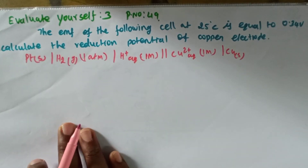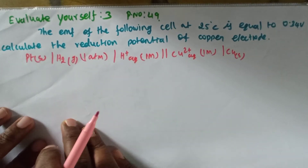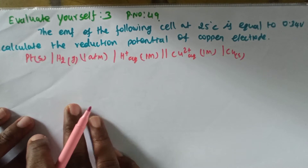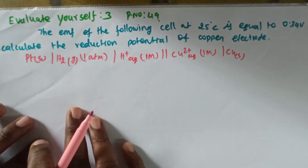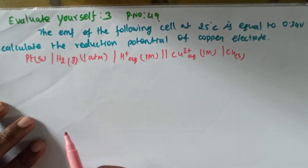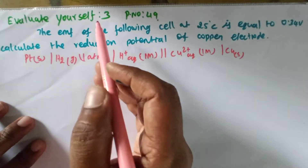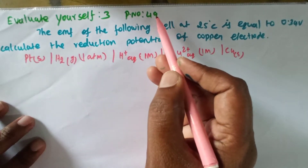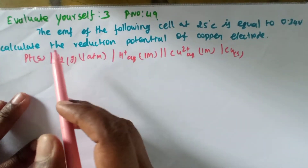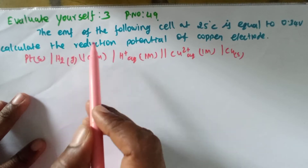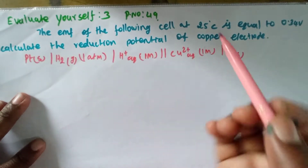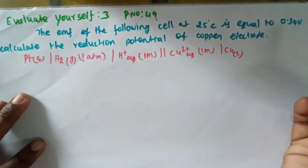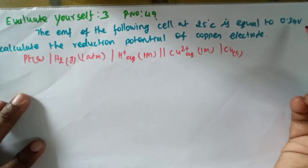Welcome students, this is chemistry class, unit number 9, electrochemistry, 20th standard. Evaluate your cell, question number 3, page number 49. The first question: the EMF of the following cell at 25 degrees Celsius is equal to 0.34 volt.